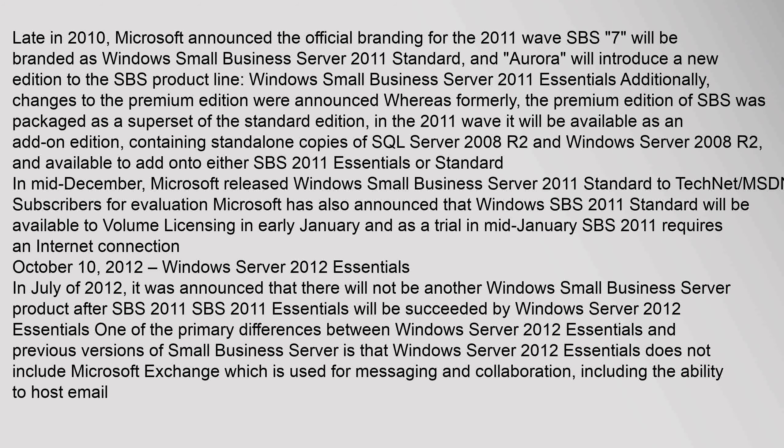Late in 2010, Microsoft announced the official branding for the 2011 wave: SBS 7 will be branded as Windows Small Business Server 2011 Standard, and Aurora will introduce a new addition to the SBS product line — Windows Small Business Server 2011 Essentials. Changes to the Premium edition were also announced: formerly packaged as a superset of the Standard edition, in the 2011 wave it will be available as an add-on edition containing standalone copies of SQL Server 2008 R2 and Windows Server 2008 R2, available to add on to either SBS 2011 Essentials or Standard. In mid-December, Microsoft released Windows Small Business Server 2011 Standard to TechNet/MSDN subscribers for evaluation, with volume licensing availability in early January and a trial in mid-January.